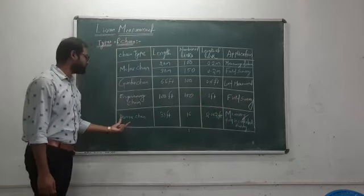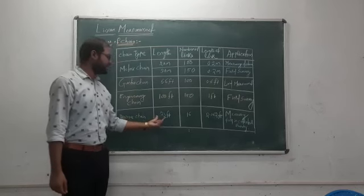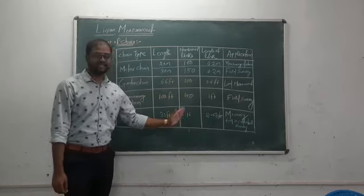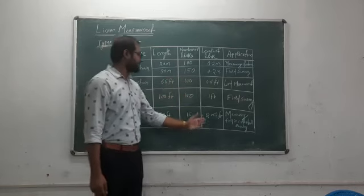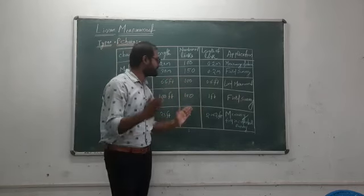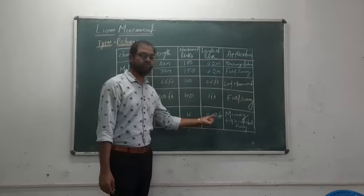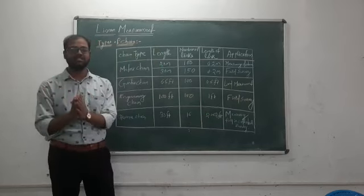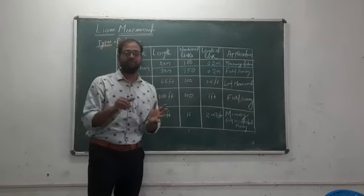Revenue chain is available in 33 feet format and it has 16 links. Each link has a length of 2.062 feet, and it is widely used for cadastral surveys. Cadastral survey means the measuring of property boundaries.